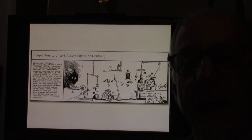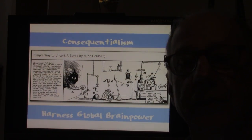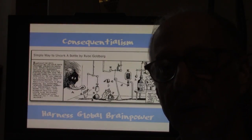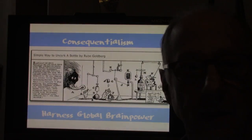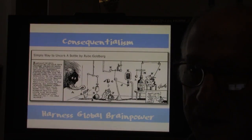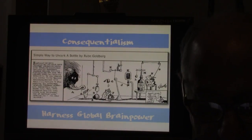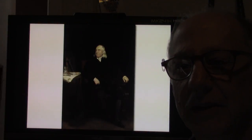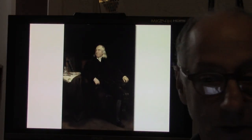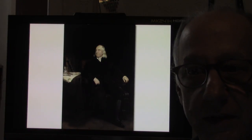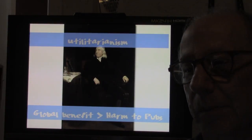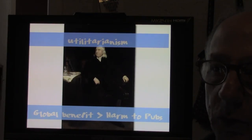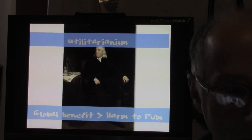But the alternative has been consequentialism, which looks at the consequences of actions. It says that's actually more important than principles. We want good outcomes. The consequentialist approach to open access might say that we get good results if everybody can access all this information—people invent things, they discover things that otherwise wouldn't have been discovered. One particular type of consequentialism has become pretty much dominant in Western thinking ever since the early 1800s. Jeremy Bentham generally gets the credit: utilitarianism. The idea is that you look at overall aggregated consequences, and your aim is to promote maximal happiness and minimize pain and suffering.